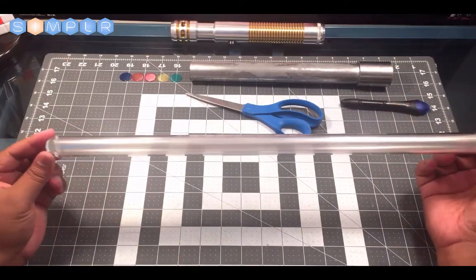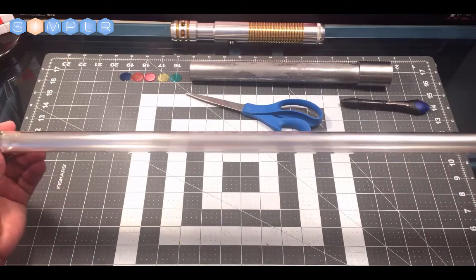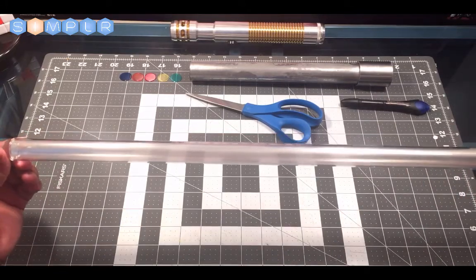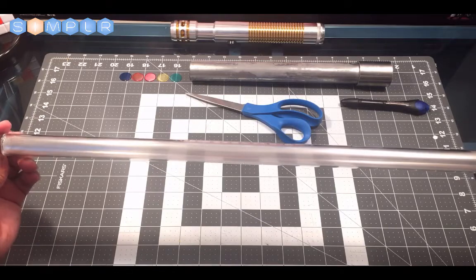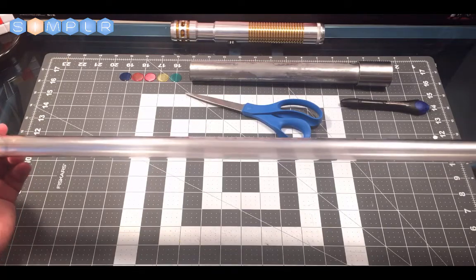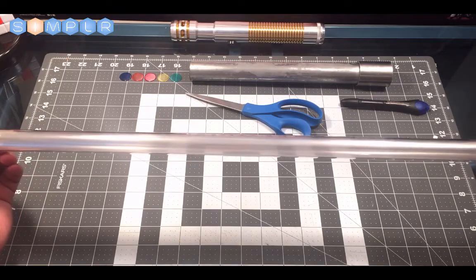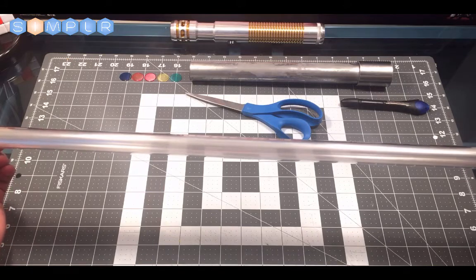So now we have a nice, even lightsaber tube that we'll use to diffuse the light evenly and make our lightsaber blade.